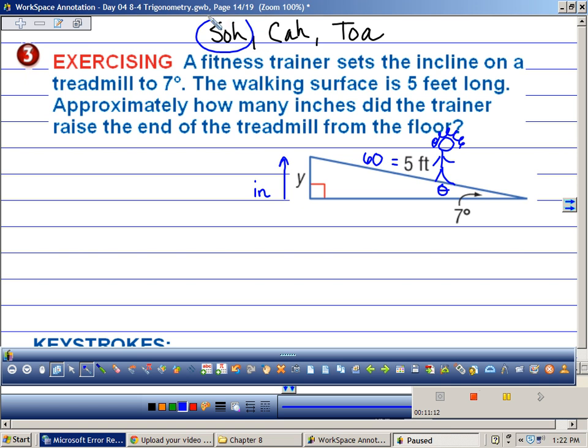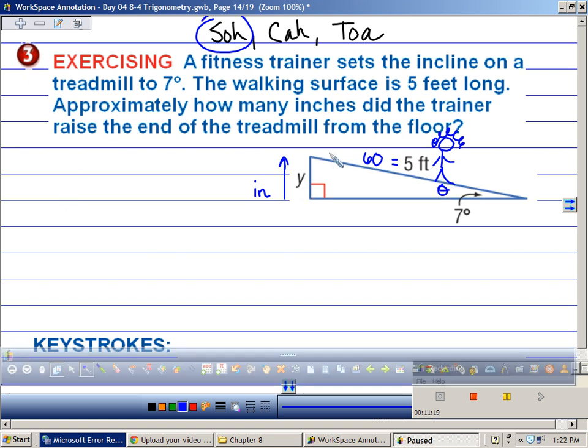So I look at the information I have. I have a y and I have 60. I have the opposite over the hypotenuse, which is soh. So I'm going to use the sine function. I have sine. What is the degree? Sine 7 equals, what's soh? Opposite over hypotenuse. So what's the opposite? Y over 60.